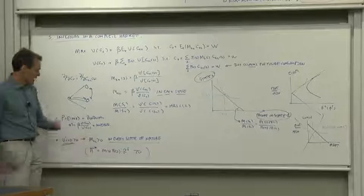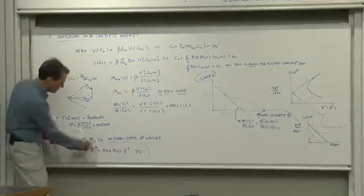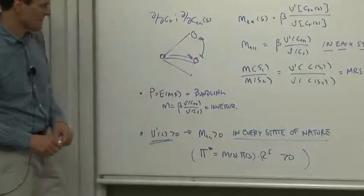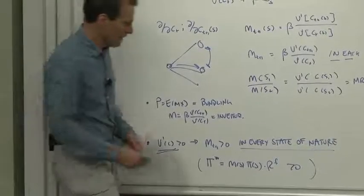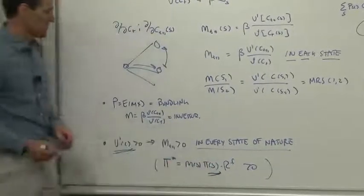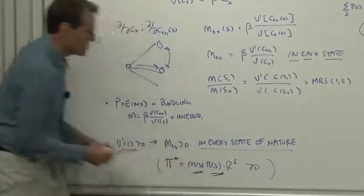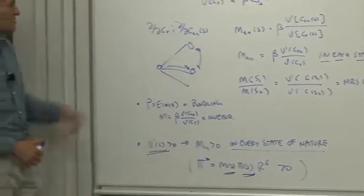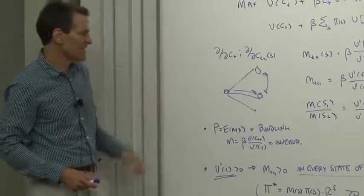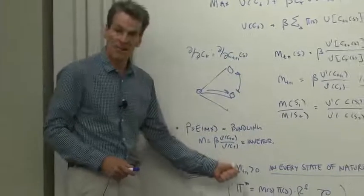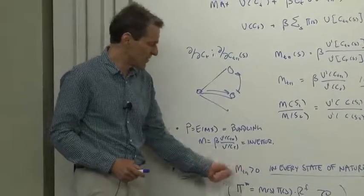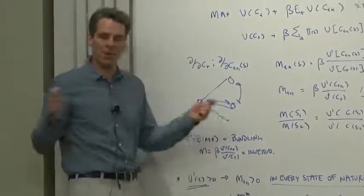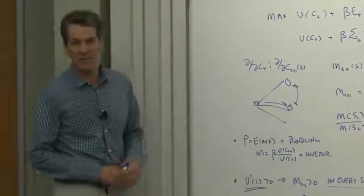So that came up already. I claimed that the risk-neutral probabilities were always positive. How did I know that? Well, because original probabilities are always positive and because marginal utility is always positive. So looking at this tells us something else. It tells us that the discount factor is going to be a random variable that's always positive no matter what happens, so long as it's connected to marginal utility.